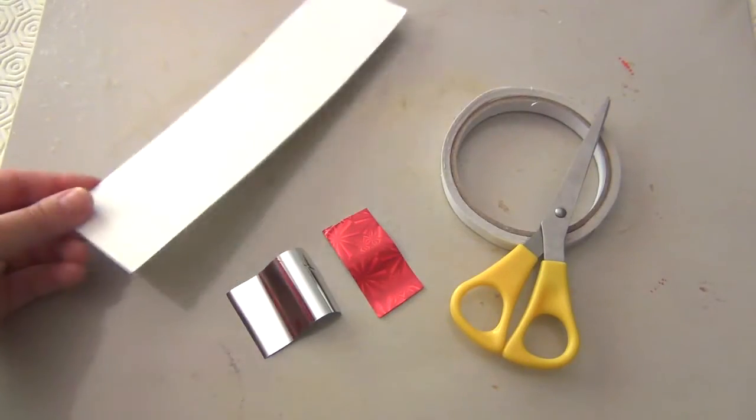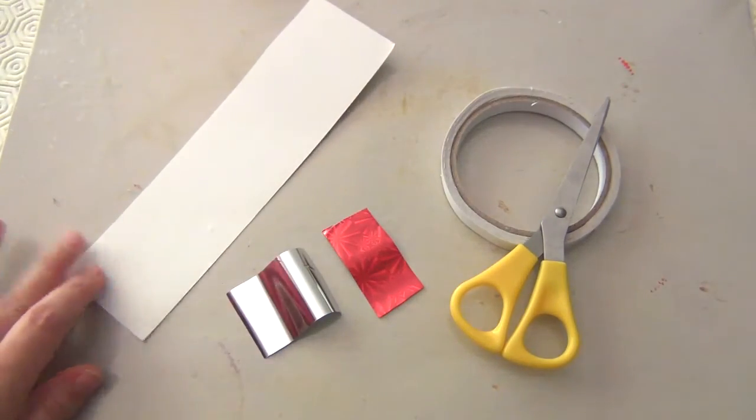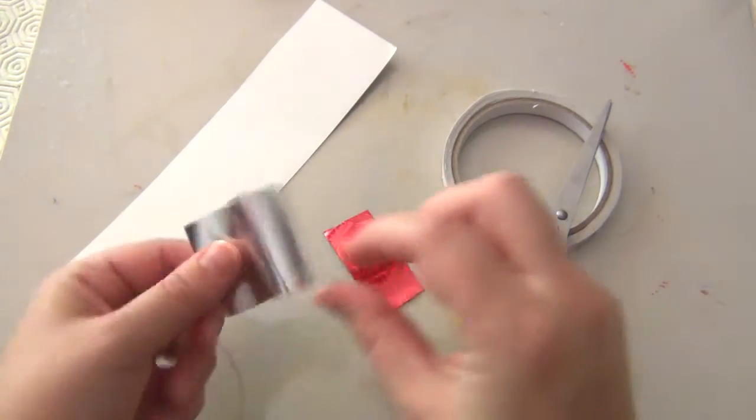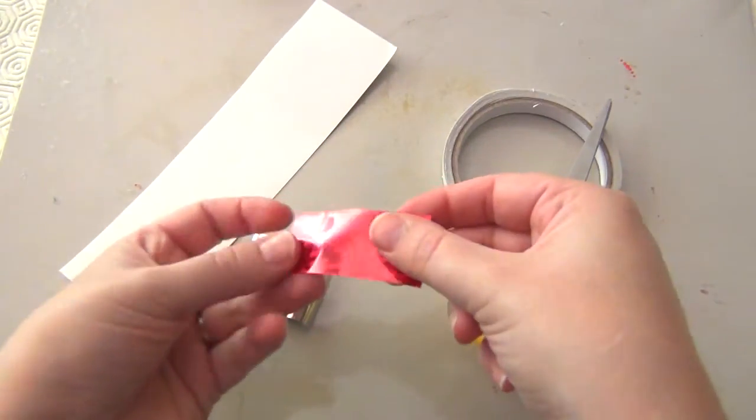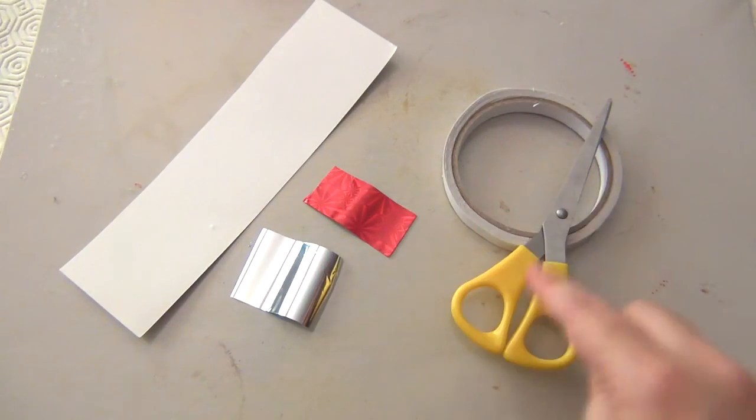The second tutorial is all about foil. Now, you need a base like a box or a piece of paper, whatever you want your surface to be. This is actually foil from the nails. The one you buy for the nails. And you also need scissors and double-sided tape.